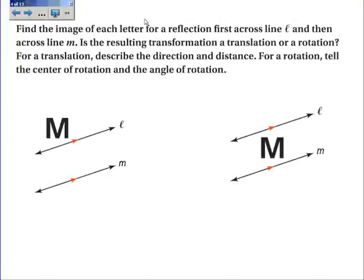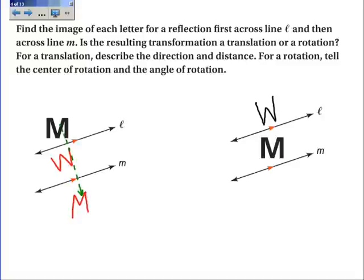We will first reflect the image across L and then across M. In these two examples they're parallel, so what you should get is a translation perpendicular to lines L and M, and it should be twice the distance that L and M are away from each other. Even if M is in between the two lines, it's still true that the translation is perpendicular to line M, and the length is twice the distance between the two lines.